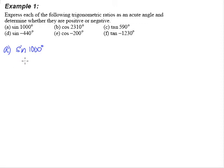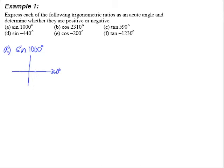First, we have to find out where exactly 1000 degrees is. One full round is 360 degrees, so coming back to square one is the same as 0 degrees. If it goes 2 rounds, that will be 720 degrees.